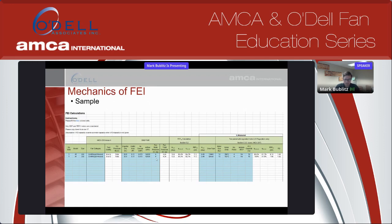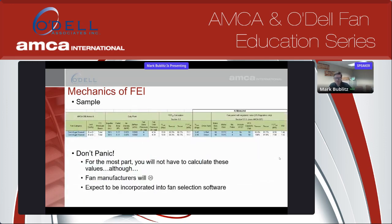So how do you actually calculate FEI? We've done a test, we have our system, we have our duty point — it's time to calculate FEI. Here's an example from the FEI calculator tool available from AMCA. The blue inputs we specify: our duty point, what kind of fan it is, then we enter our power measured and what kind of drive system and motor we've picked. And out on the far right comes the FEI value. In general, the audience won't have to do these calculations — however you interact with fan manufacturers' selection software or selection systems, that is how you will discover what the FEI of a fan system is.